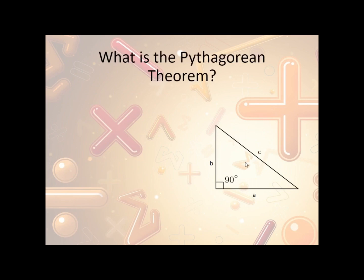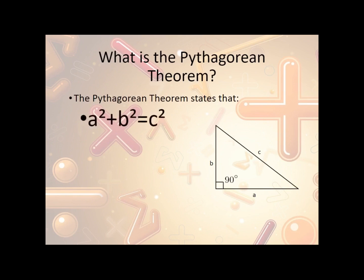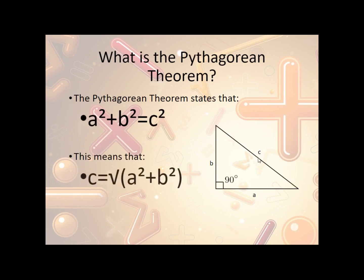So what is the Pythagorean theorem? The Pythagorean theorem states that A squared plus B squared is equal to C squared. So the square of this side length and the square of this side length is equal to the square of this one. If we simplify it and just try to find C, that means C is equal to the square root of A squared plus B squared.